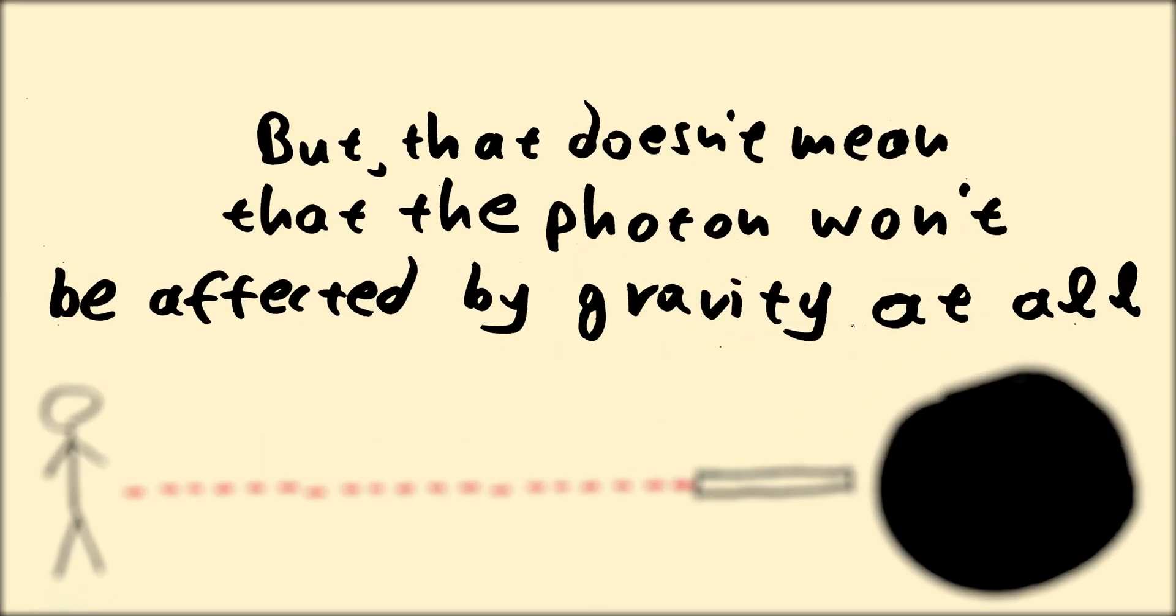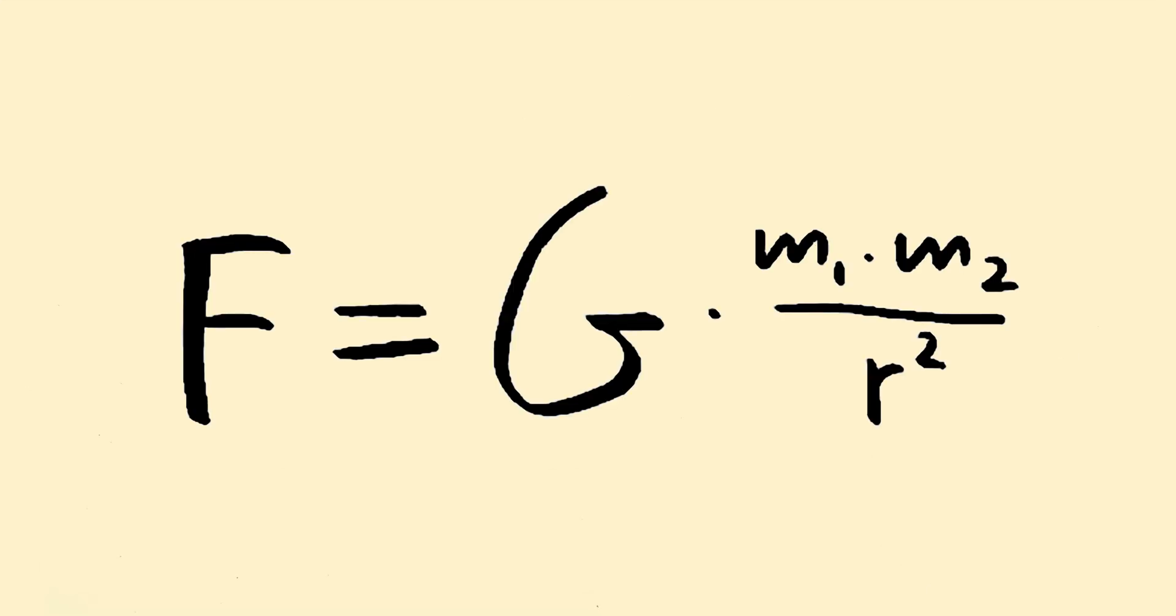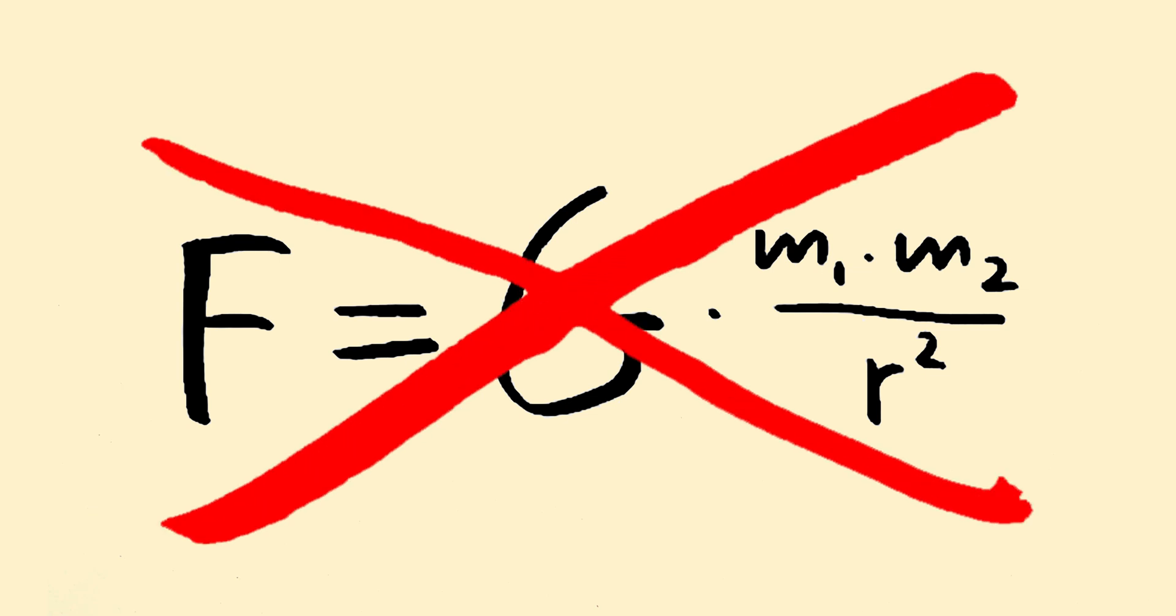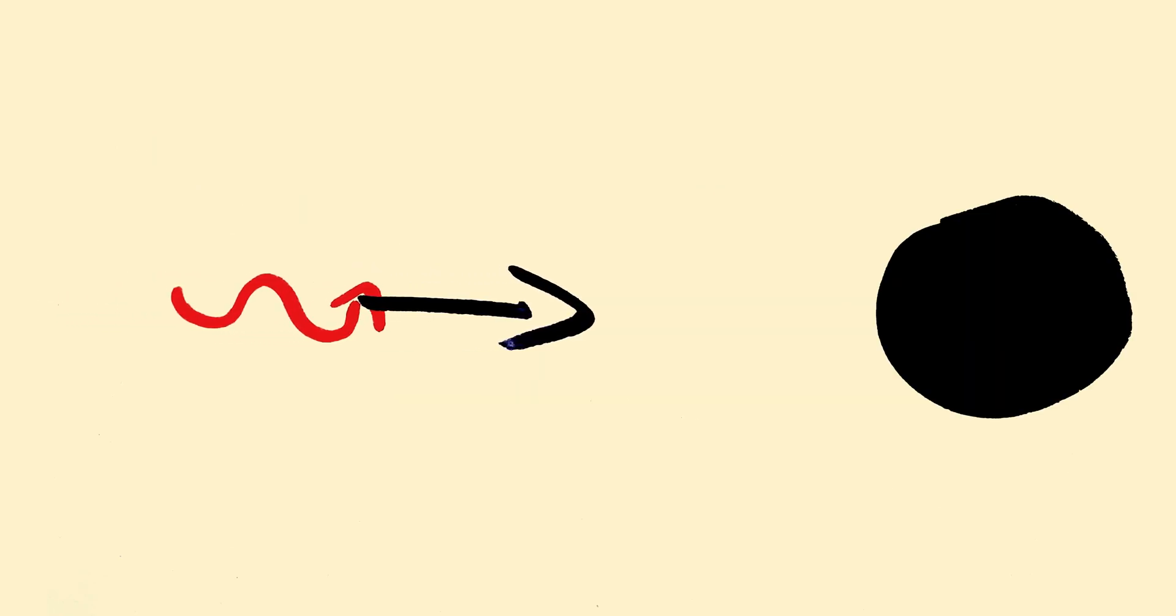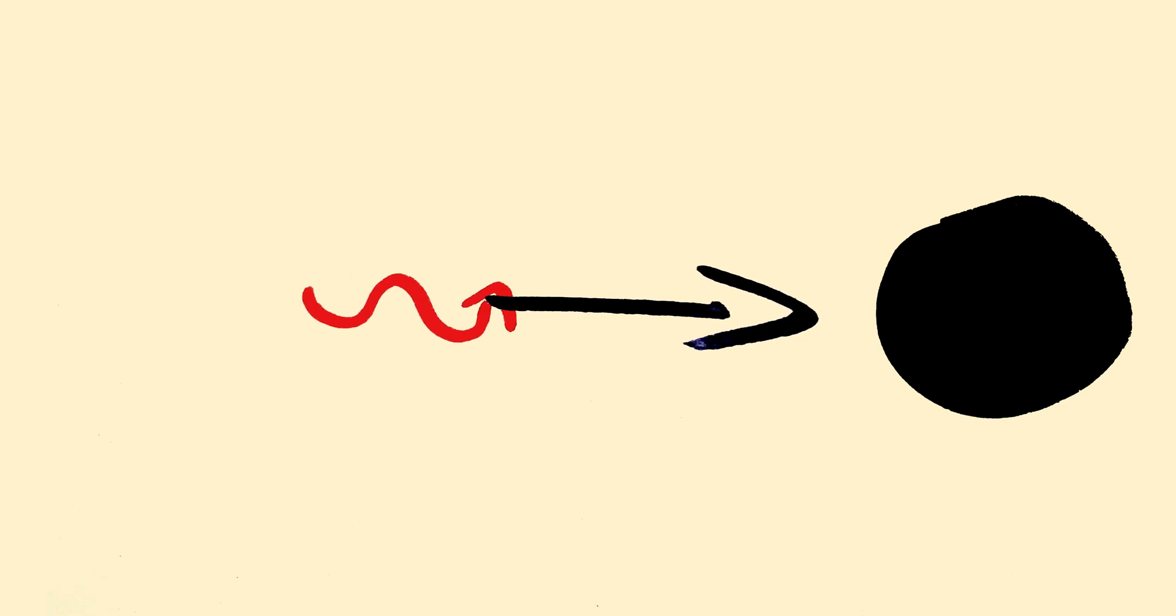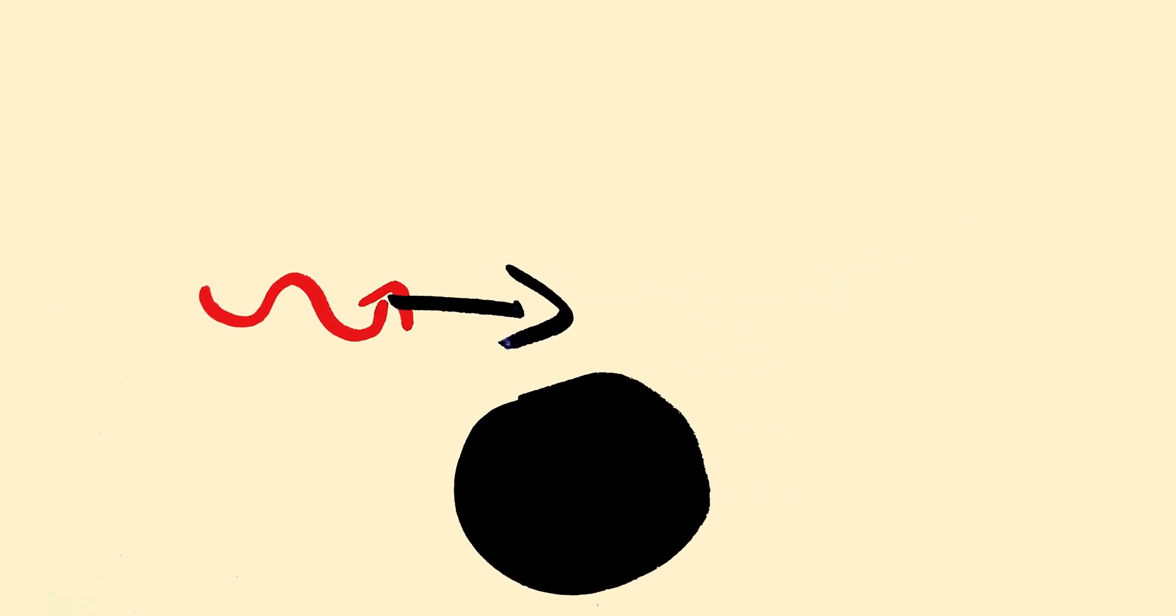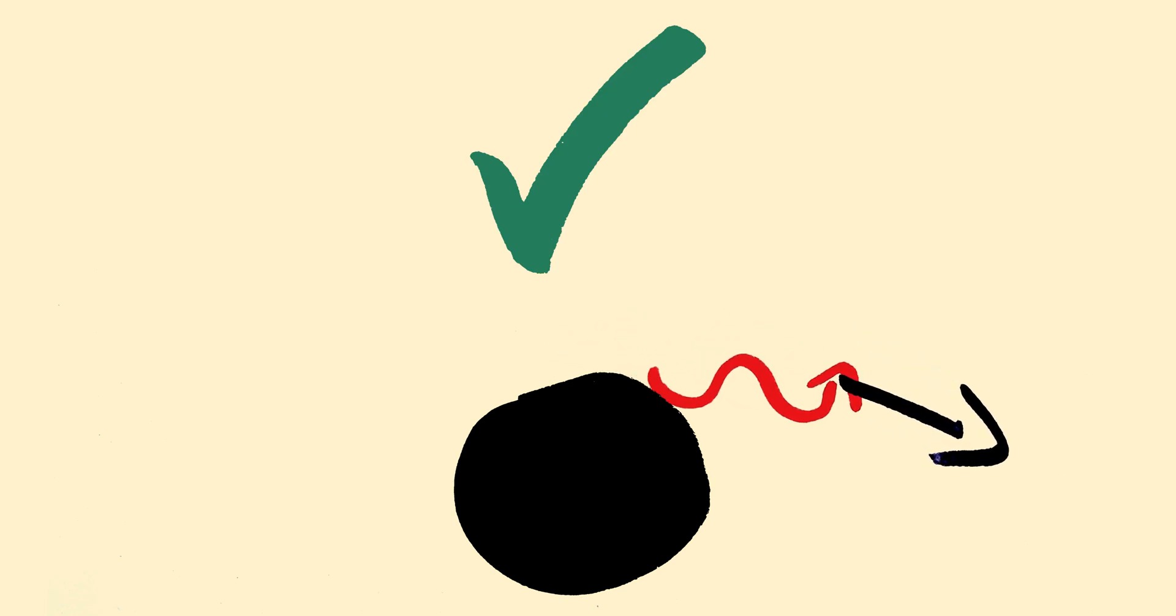But that doesn't mean the photon won't be affected by gravity at all. According to the law of universal gravitation, light shouldn't be affected by gravity because it doesn't have any mass. Well, the universal law of gravitation is wrong. Gravity affects light. For example, while gravity cannot change the value of a photon's velocity, it can change the direction of its velocity.